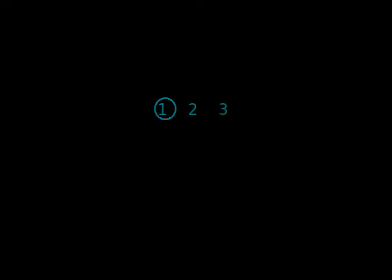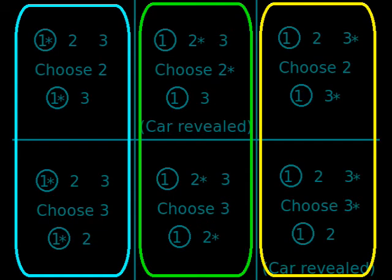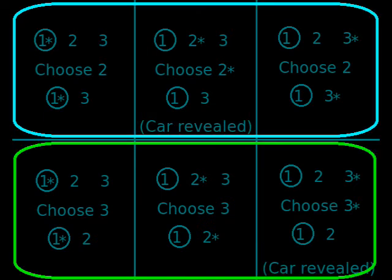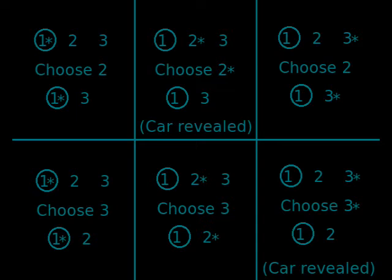Let's examine what happens if the host opens a remaining door randomly. Since the numbering system is arbitrary, we'll stick with the convention of this problem and call the contestant's choice door number 1. The remaining doors are 2 and 3, and the door with the car behind it is marked with an asterisk. We'll consider all the permutations, and in each case we'll have the host choose either door 2 or door 3, and note the doors remaining and where the prize is on the last line. As you can see, each column represents the prize being behind a different door, and each row represents a different choice by the host. All of these permutations are equally likely if the host has acted randomly.